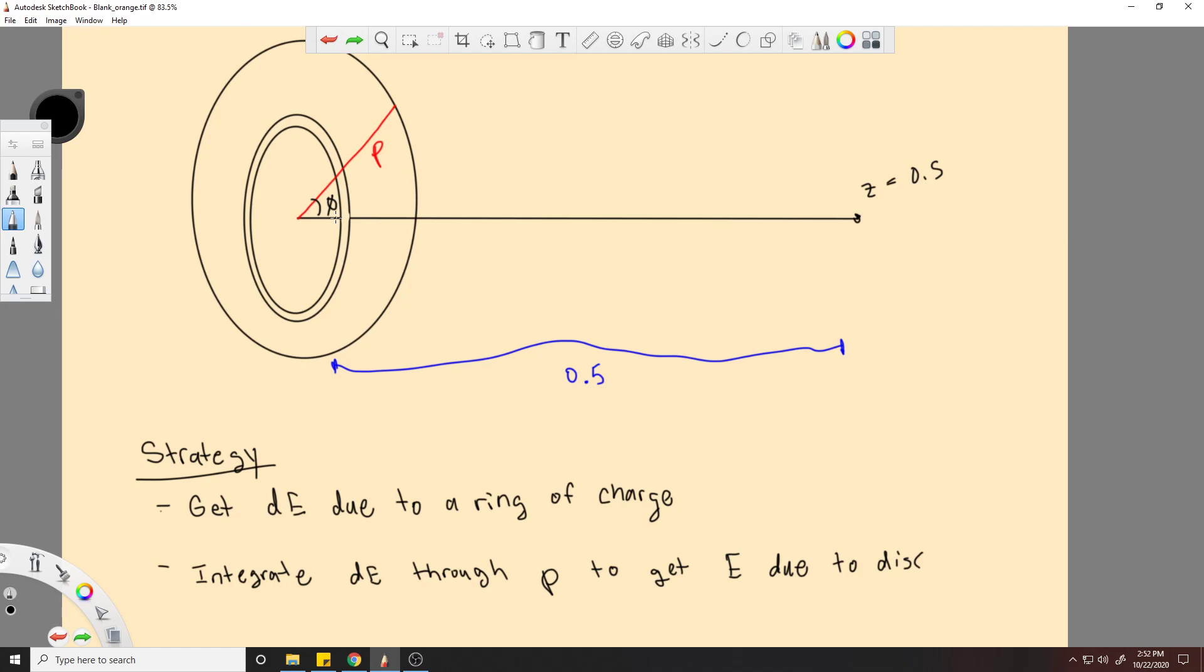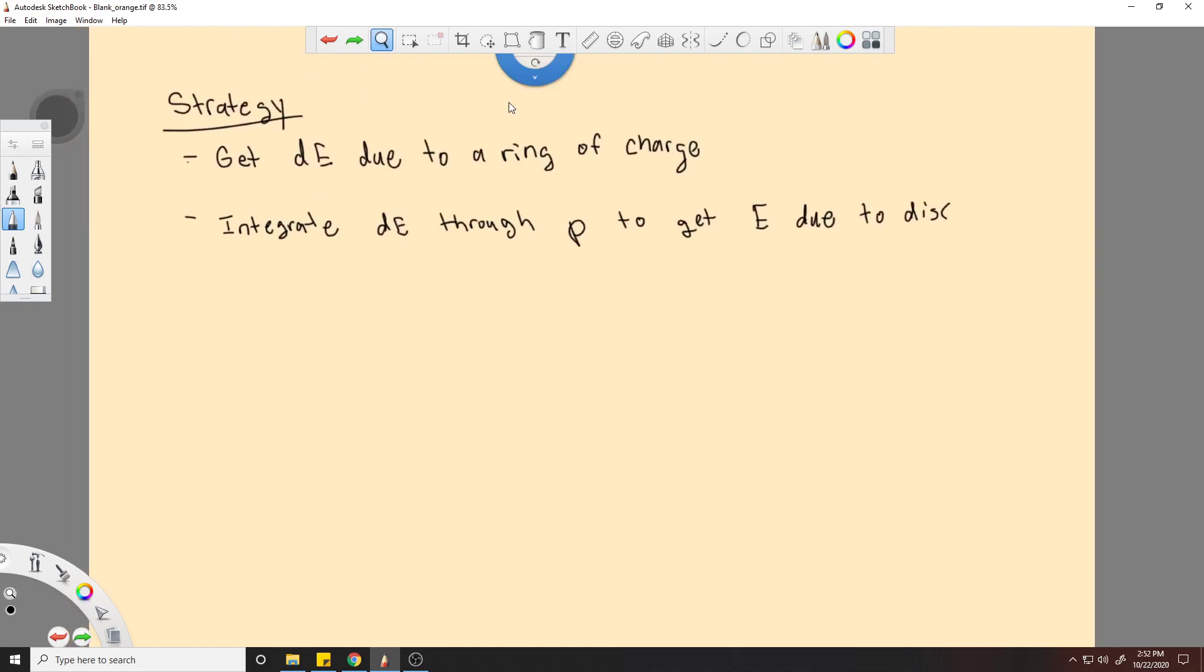Okay, so the first thing we need to do is get a ring of charge equation. Ring of charge equation, and that would be equal to Z, 4 pi epsilon naught dQ over rho squared plus Z squared to the three halves.